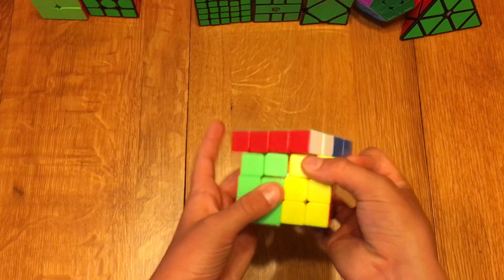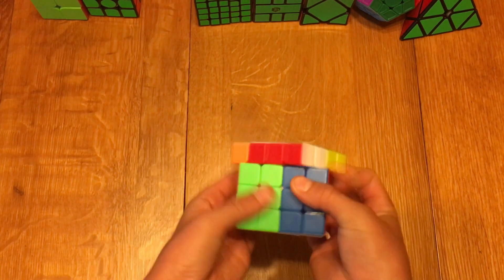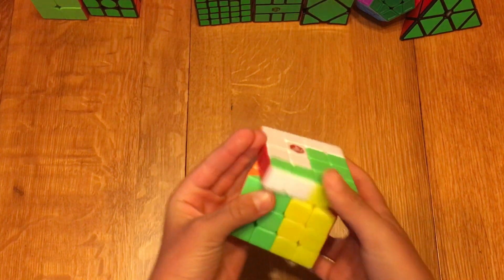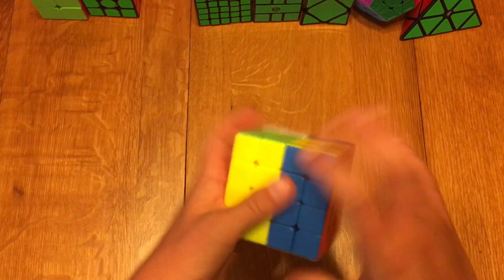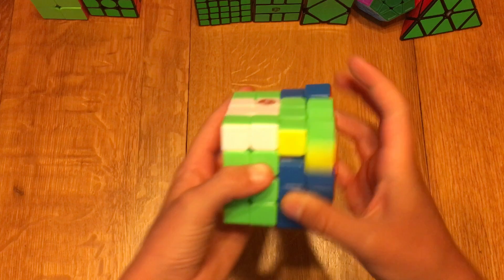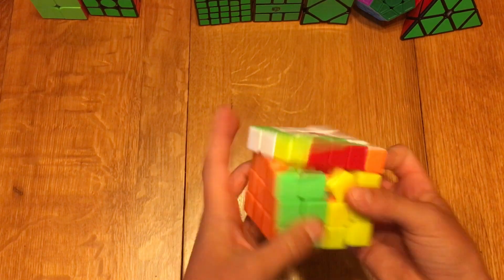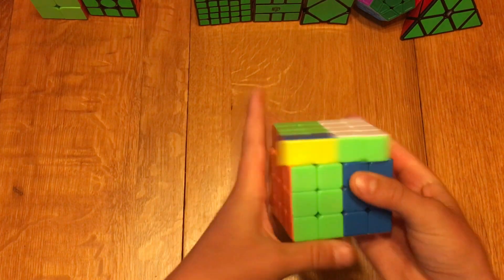So for 4x4, I'm using the MoYu AoSu GTS2 M. I'm hoping to get a sub-1:50 average and a sub-1:45 single.